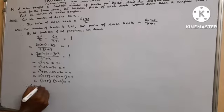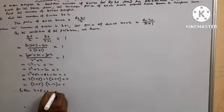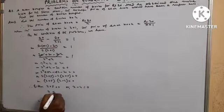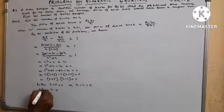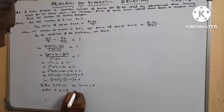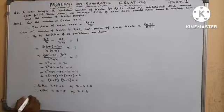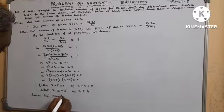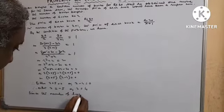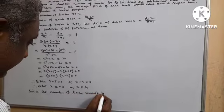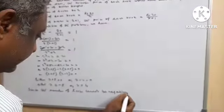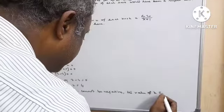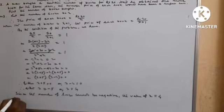Therefore either x + 5 = 0 or x - 4 = 0, giving x = -5 or x = 4. Since the number of books cannot be negative, the value of x equals 4. Therefore the required number of books is 4.